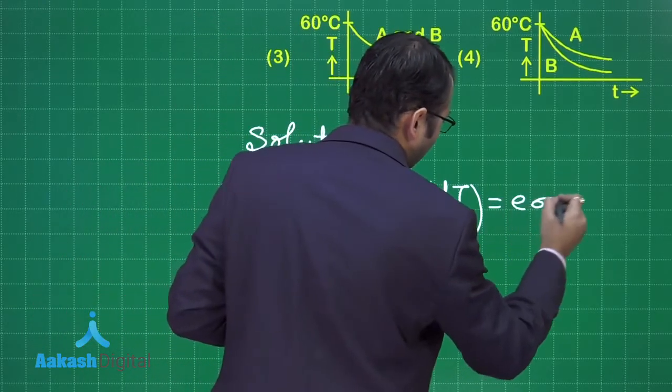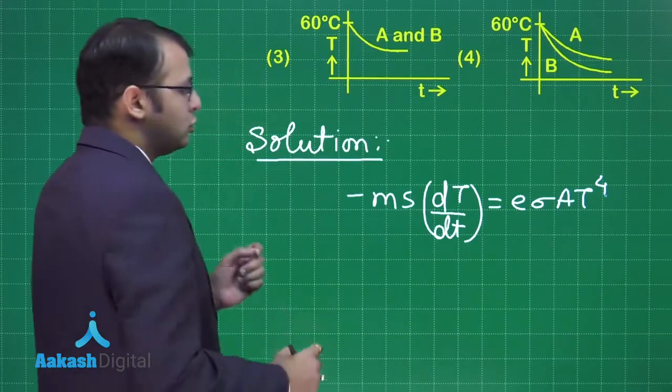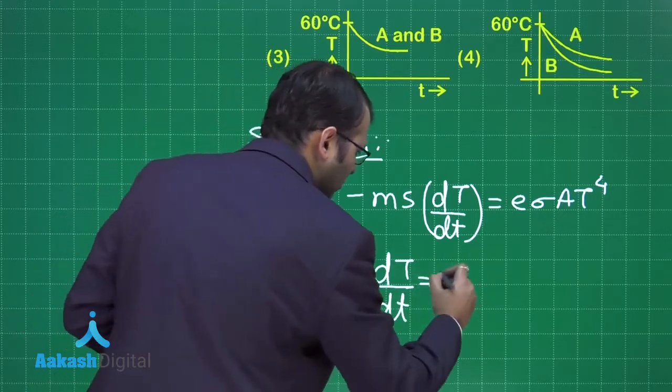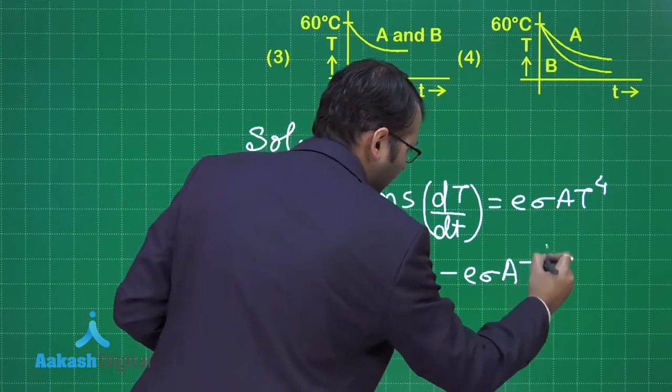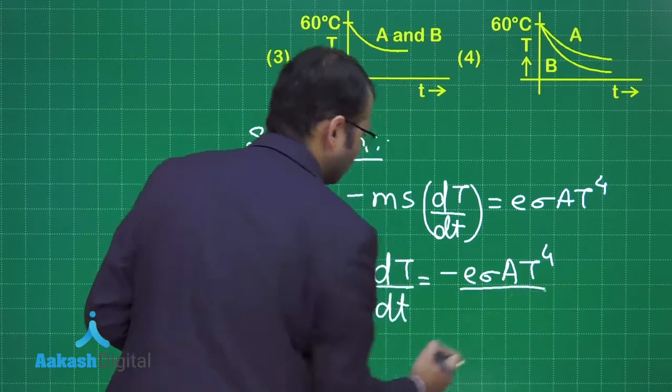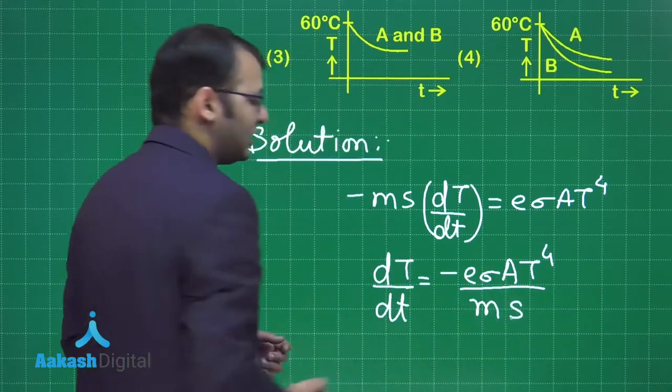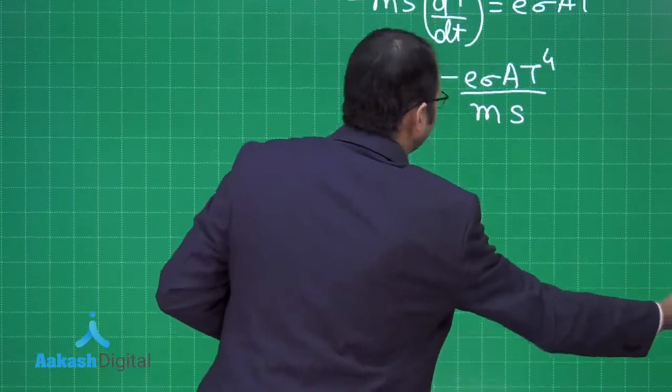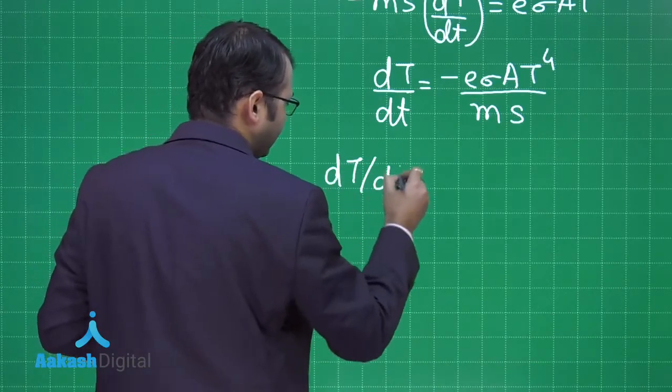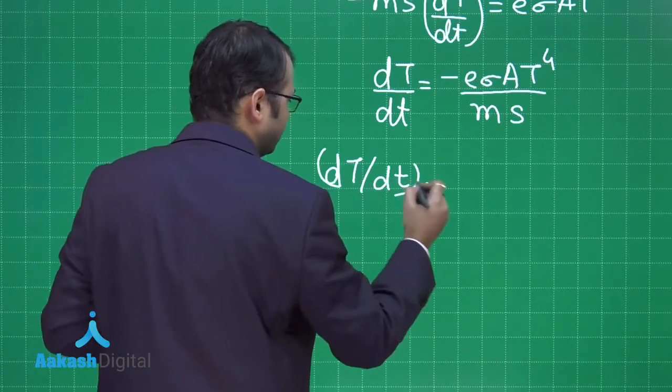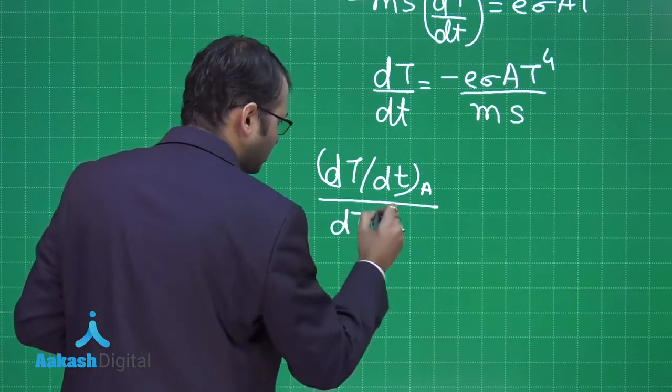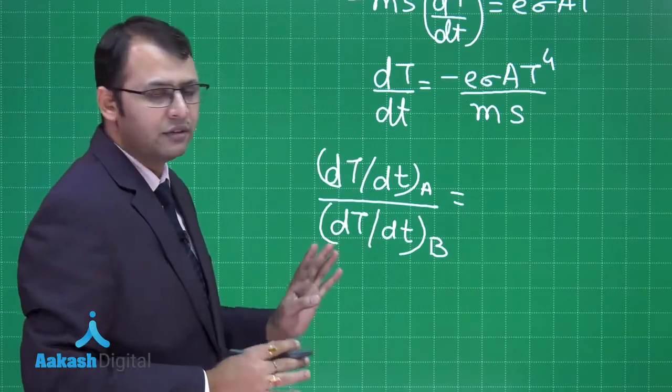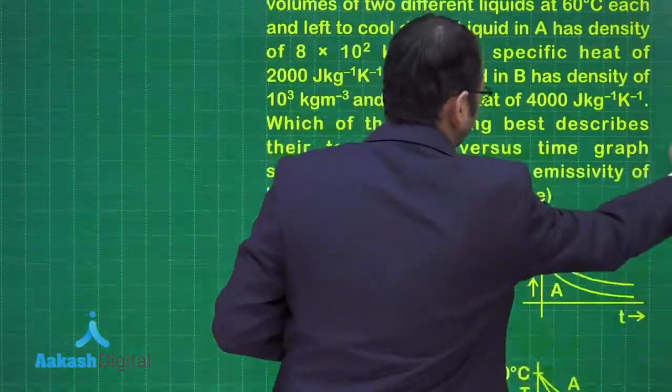This minus T₀⁴, where T₀ is the surroundings temperature, divided by m times s, the specific heat. From here you have two liquids A and B. If you understand dT/dt for A, that is the rate of change of temperature of A to the rate of change of temperature of B.